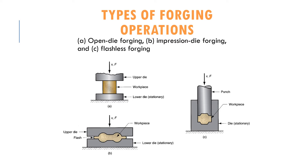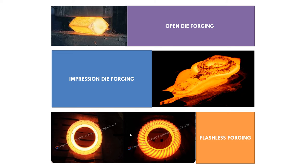Here are some examples of products produced via forging. The first shows material produced through open die forging — there is no wall between the bulk material. The second shows impression die forging, with visible flash on the outside. The third shows flashless forging, also known as precision forging, which produces products that are high in precision and tolerance.